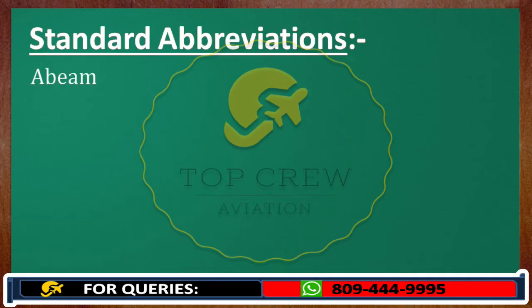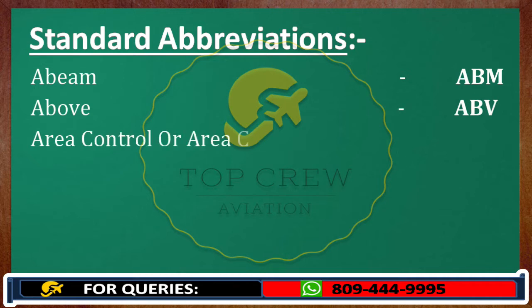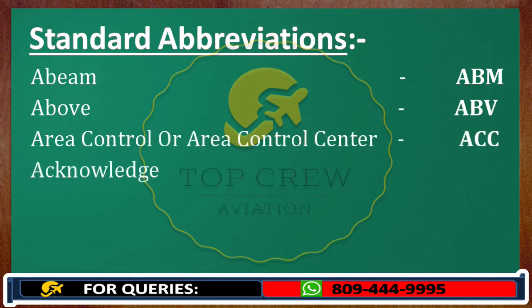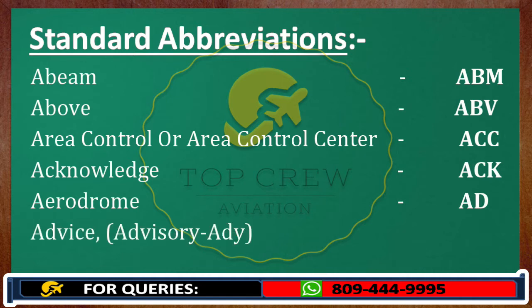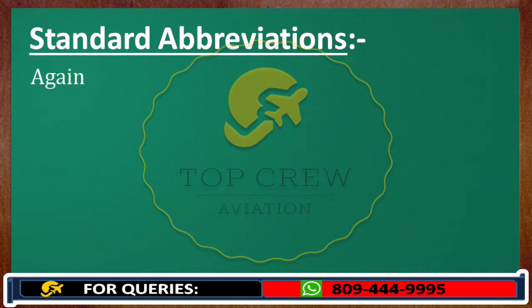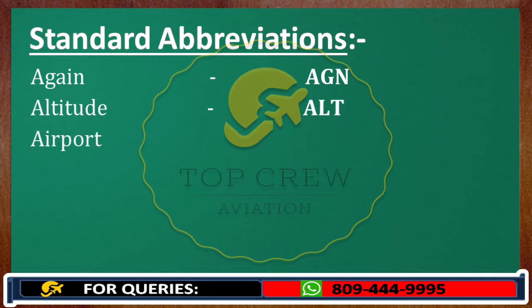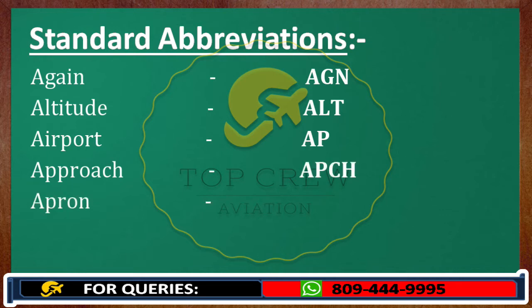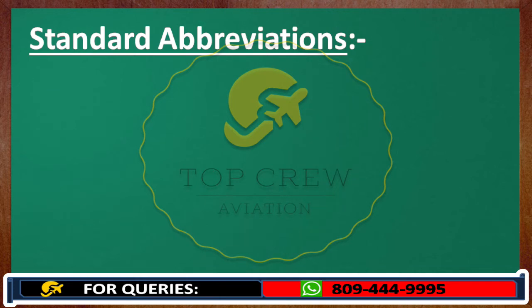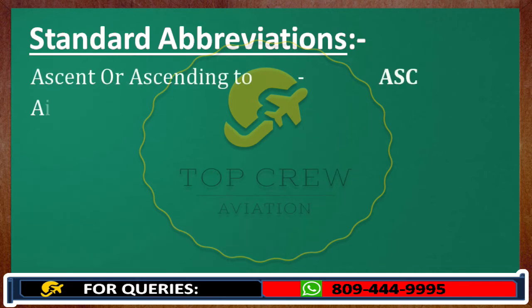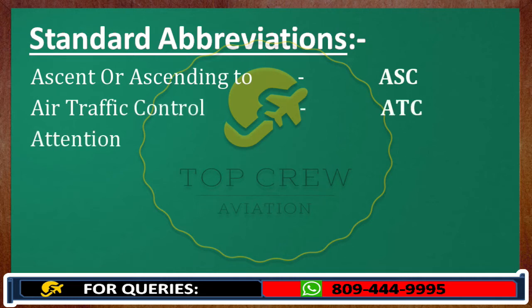AB. ABM — Above, ABV. Area Control or Area Control Center — ACC. Acknowledge — ACK. Aerodrome — AD. Advise. Advisory — ADZ. Again — AGN. Altitude — ALT. Airport — AP. Approach — APCH. APRN — APN. Approve or Approved — APV. Ascent or Ascending to — ASC. Air Traffic Control — ATC. Attention — ATTM.